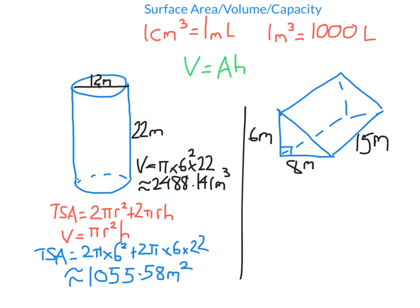For capacity, the only difference from volume is units. Volume is in cubic units (cm³, m³); capacity is in liquid units (mL, L, kL). The key conversions: 1 m³ = 1000 L. So for the cylinder with volume 2488.141 m³, multiply by 1000 to get the capacity in litres: 2,488,141 L. That's expected for such a large cylinder — bigger than most houses.